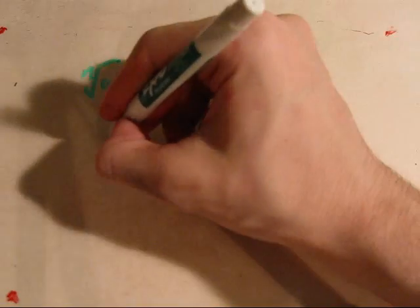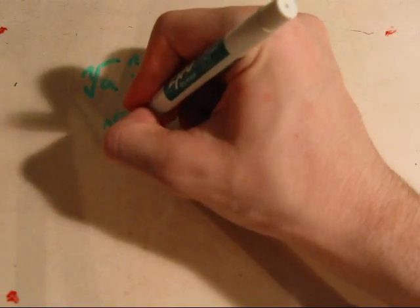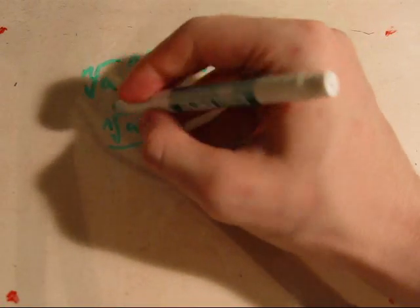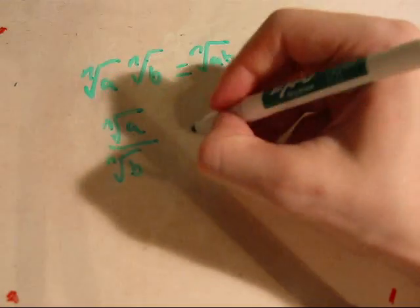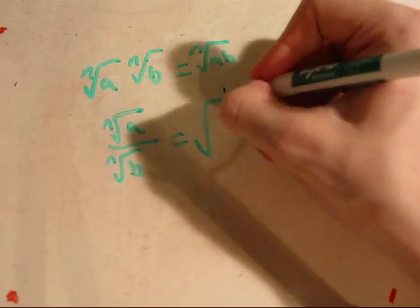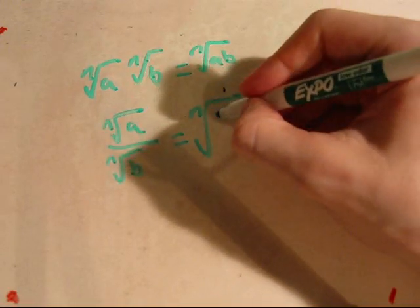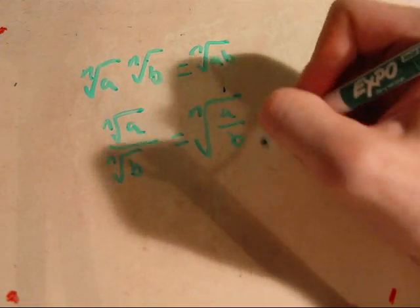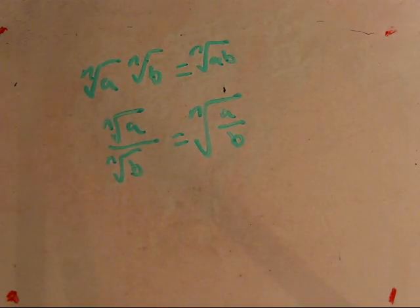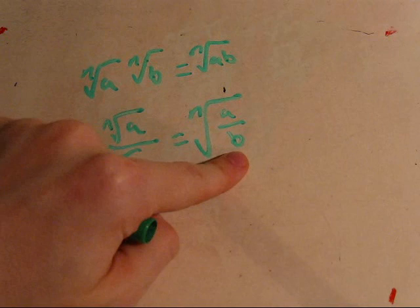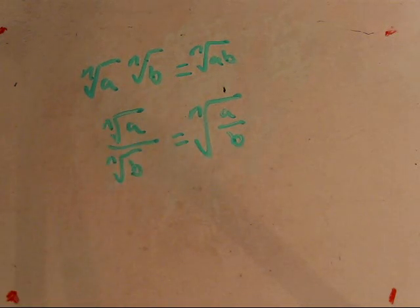If you've got it as a base to an nth root over a base to an nth root, that also simplifies to the nth root of the two bases divided. And as long as this base is not equal to zero, the property is legal.